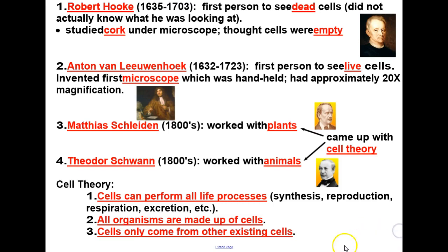The third main point is that cells can only come from other existing cells. Cells come from themselves — they don't come from any other inanimate objects.